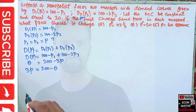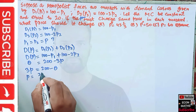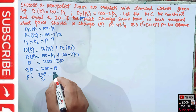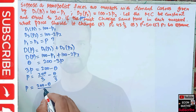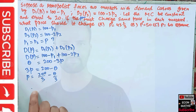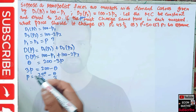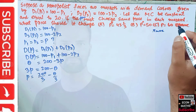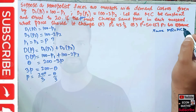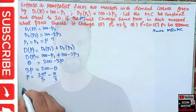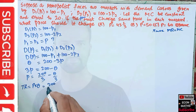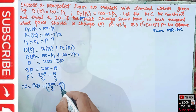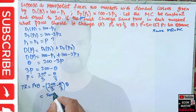Now we need to find the inverse demand function. Solving Q = 200 - 3p for p, we transpose to get 3p = 200 - Q, so p = 200/3 - Q/3. This is our inverse demand function. Total revenue is price times quantity: TR = (200/3 - Q/3) × Q = 200Q/3 - Q²/3.